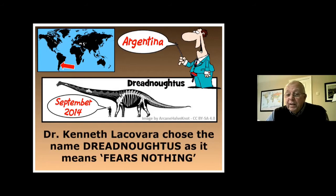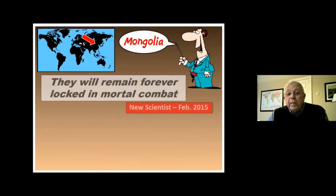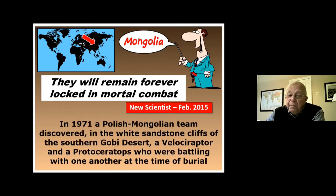Mongolia — New Scientist 2015, February: 'They will remain forever locked in mortal combat.' In 1971 a Polish-Mongolian team discovered in the white sandstone cliffs of the southern Gobi Desert a Velociraptor and a Protoceratops battling with one another at the time of burial. These land creatures were fighting one minute, and the next were covered with sediment and locked into the white sandstone cliffs.